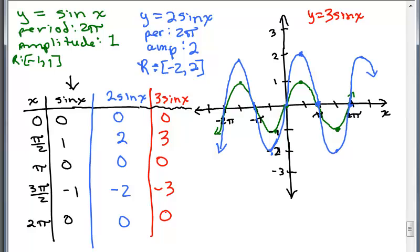So our key points here are 0, 0, pi over 2, 3, pi 0, 3 pi over 2, negative 3, and 2 pi 0. And what's happening is this gets stretched even more. And there we have a little bit more than one cycle. If you were going to do two cycles, you can go down to here, go up. I know I'm not doing a great graph here, but you get the idea.